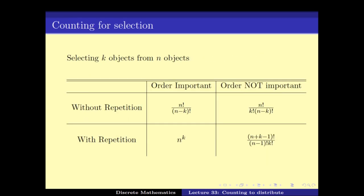In the last video, we looked at the problem of how many ways can we select k objects from n objects. There are four cases depending on two questions: first, are we allowed to pick objects multiple times — is repetition allowed? And second, inside the selected set of objects, does ordering matter or not? Is it just a group or is it an ordered set? Depending on that we get four different counts.